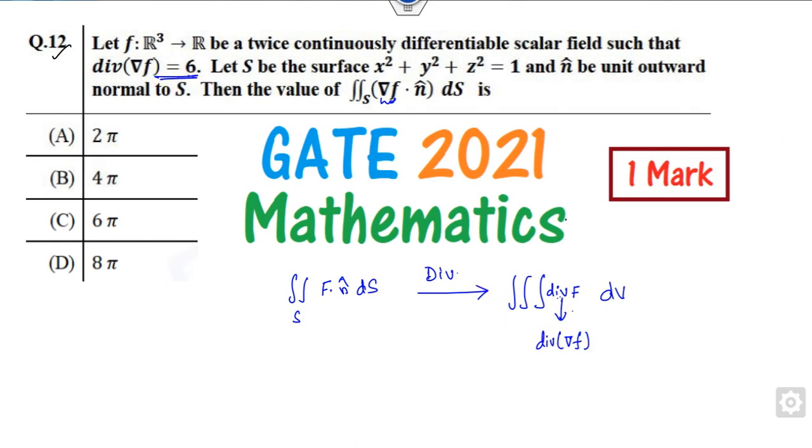So the right answer becomes triple integration of 6 over the volume. 6 can be taken outside, and this is the volume of the surface, which is a sphere.